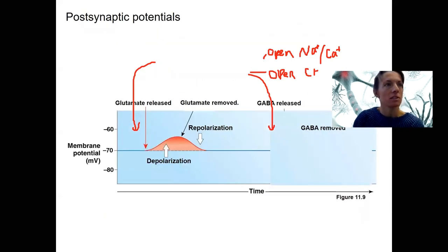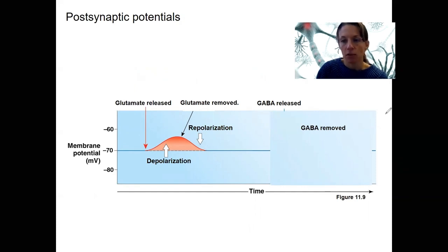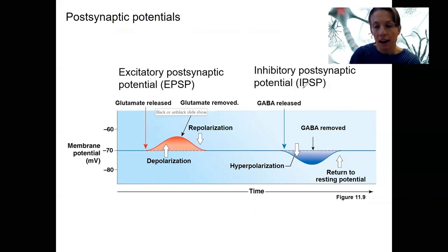Here is the answer in a schematic. We've got resting membrane potential where we start at minus 70. When glutamate is released, sodium and calcium are going to flow into the cell and cause depolarization. Once glutamate is removed, we have repolarization. Then for GABA — GABA released causes the cell to become more negative because chloride is flowing in. When GABA is removed, we go back to rest because that neurotransmitter signal was terminated. These are called EPSPs and IPSPs.